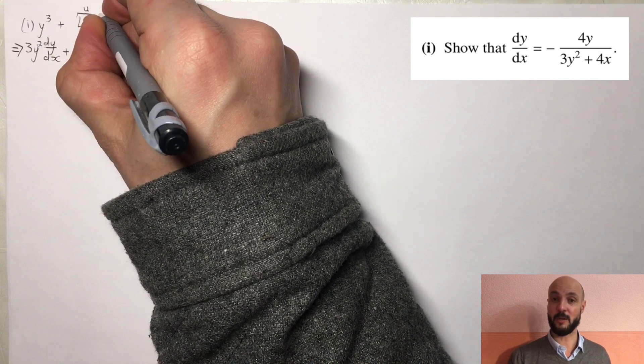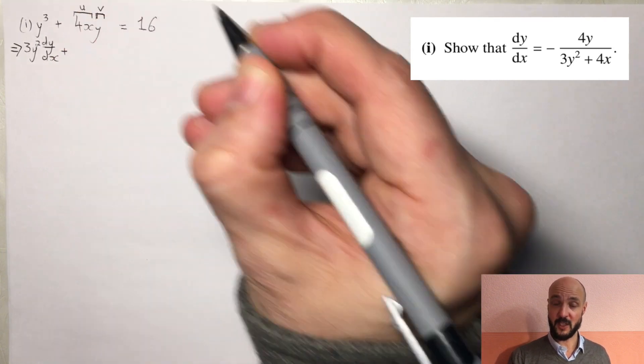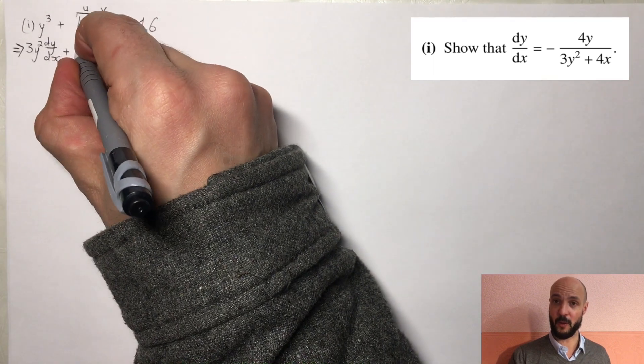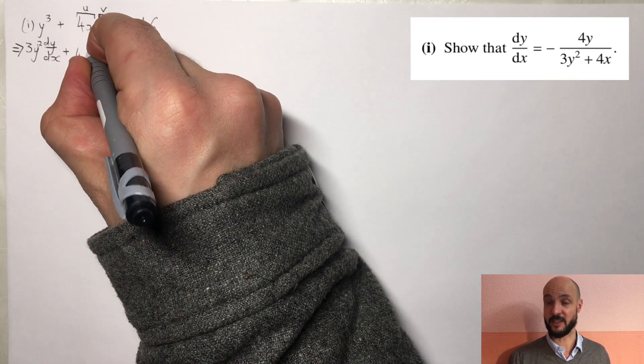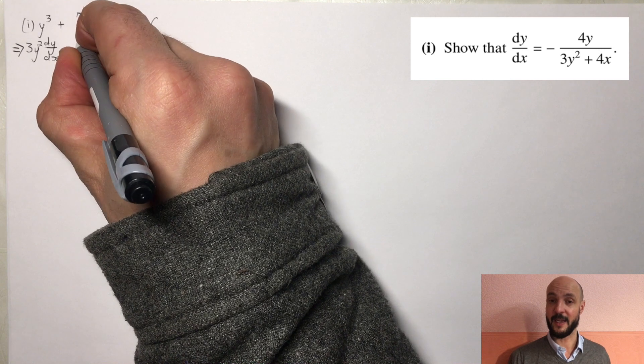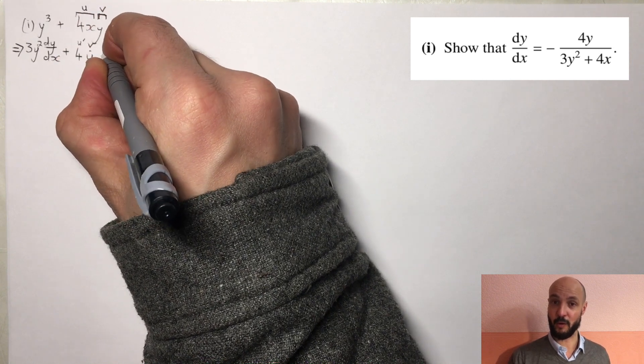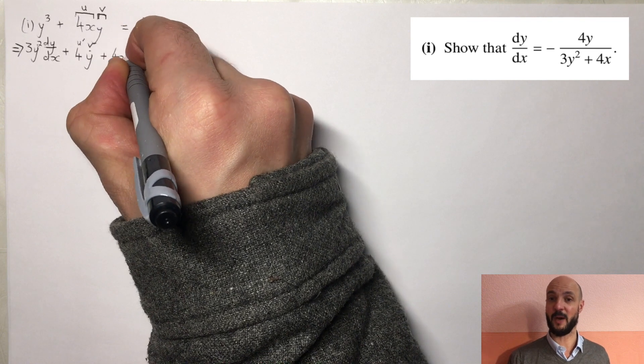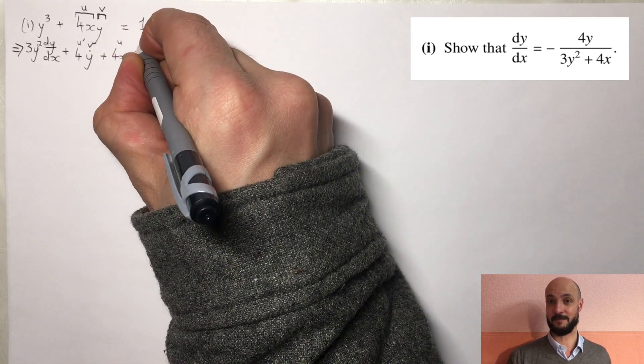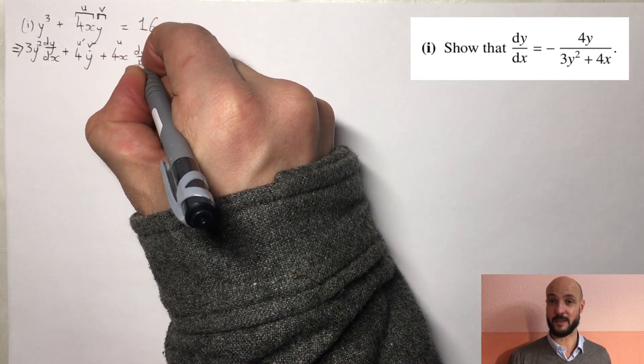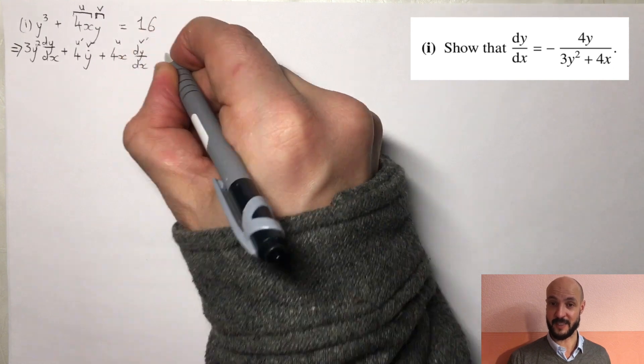Plus, for 4xy we use the product rule. So differentiate 4x gives us 4 times by y, plus 4x times dy/dx. Equals, then 16 of course is a constant just differentiates to give us 0.